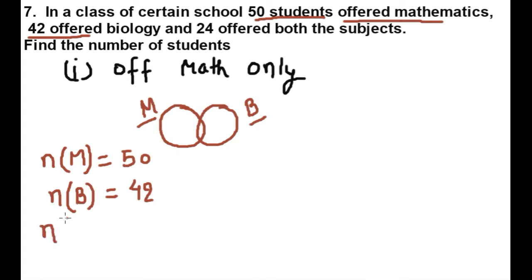Number of students who offered both means the common part — those students who are studying both subjects, maths and biology.